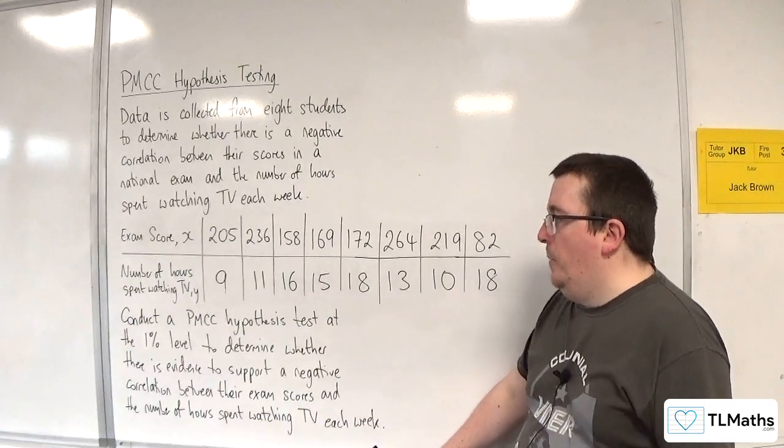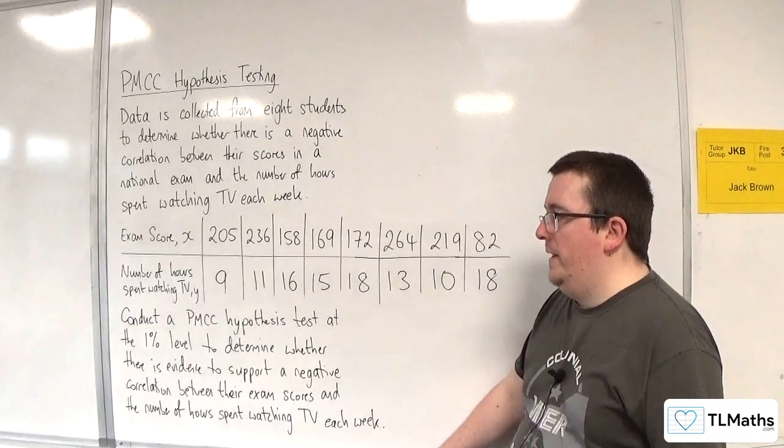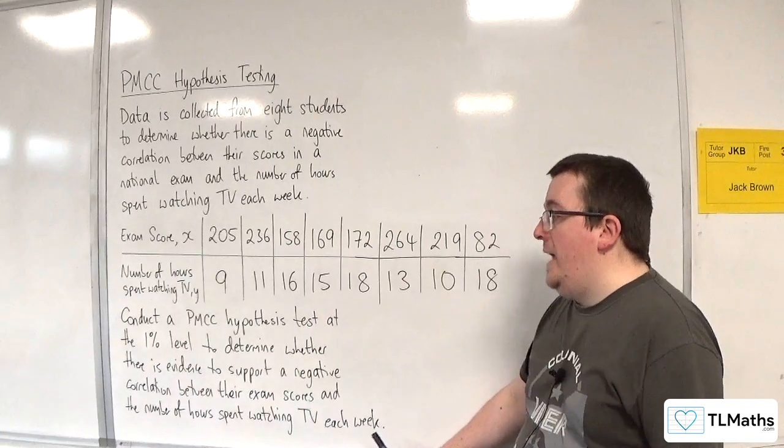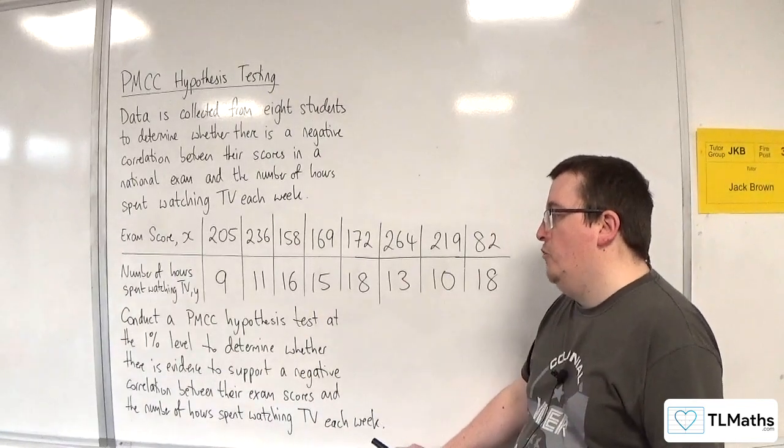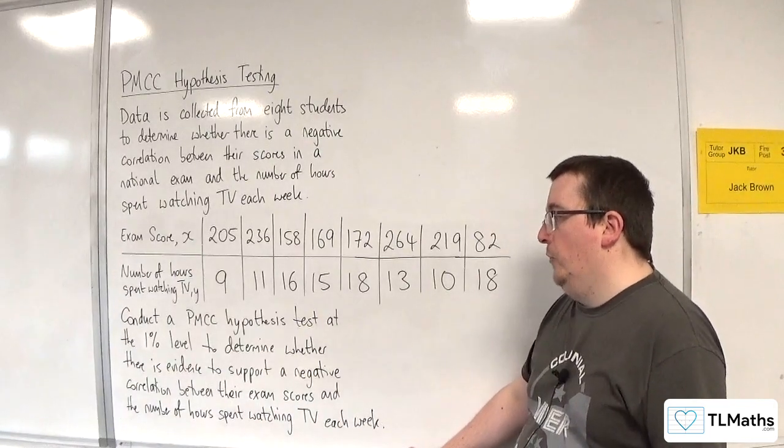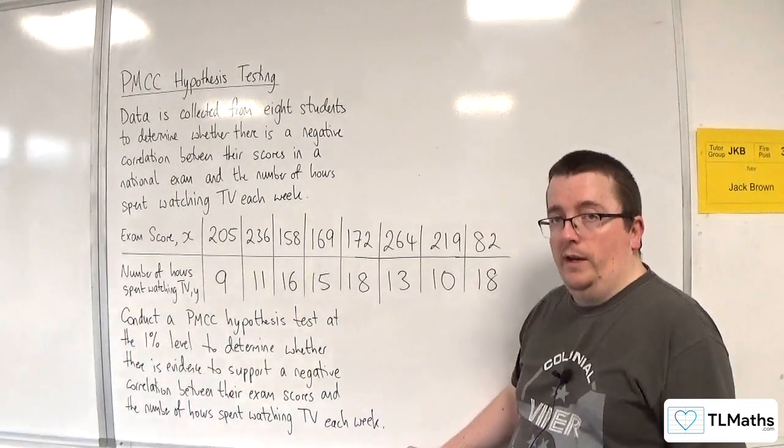Conduct a PMCC hypothesis test at the 1% level to determine whether there is evidence to support a negative correlation between their exam scores and the number of hours spent watching TV each week.